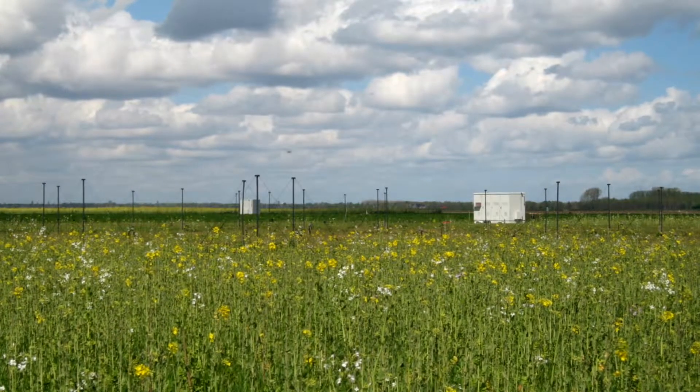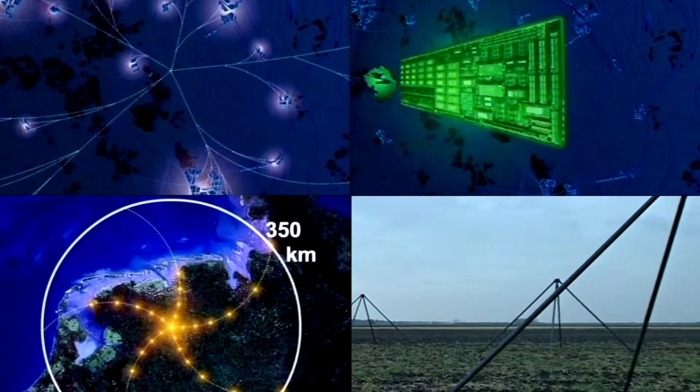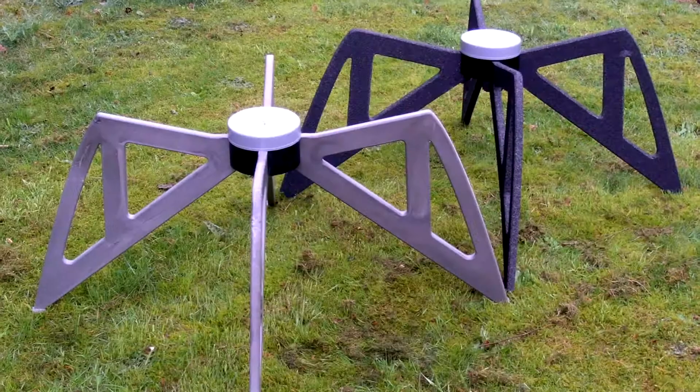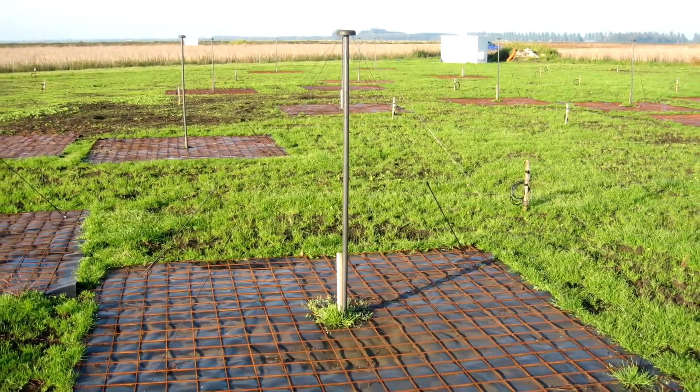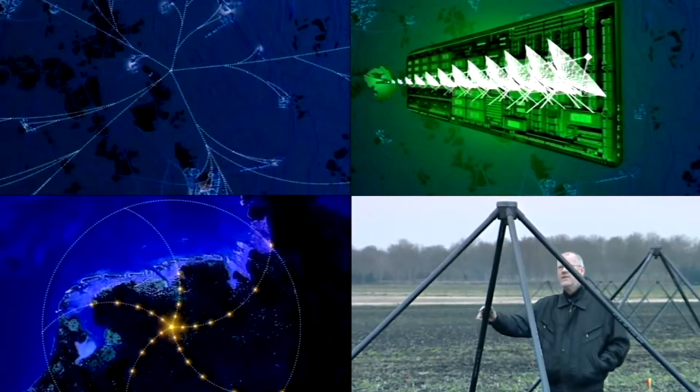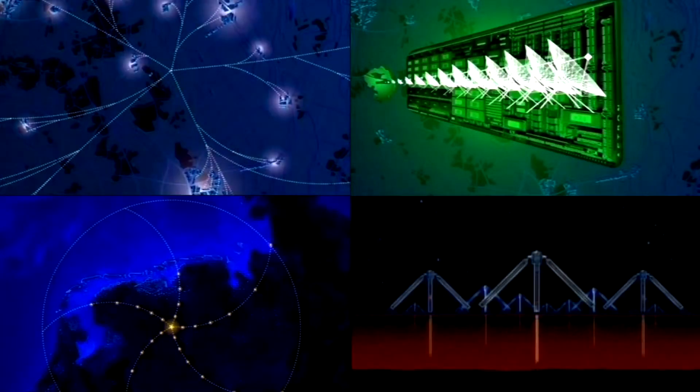In the Netherlands, the low-frequency array, called LOFAR, is under construction. Fiber optics will connect 30,000 antennas to a central supercomputer. The novel design has no moving parts, but it can observe in eight different directions simultaneously.